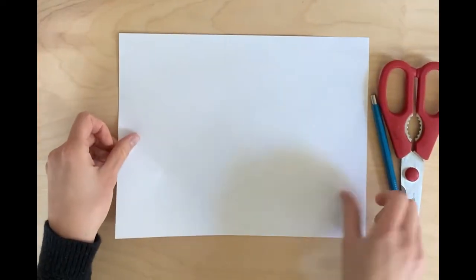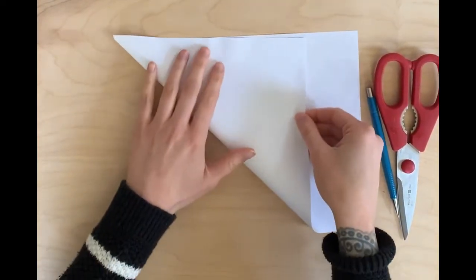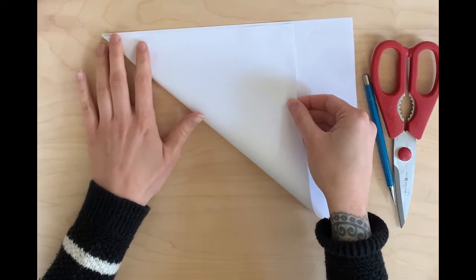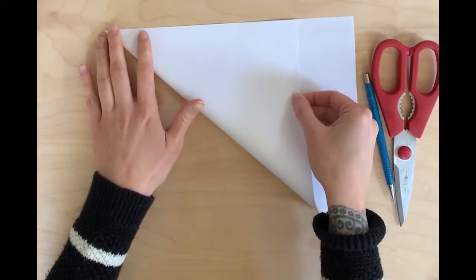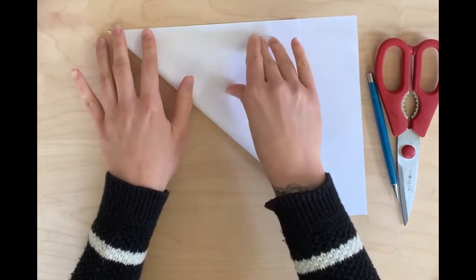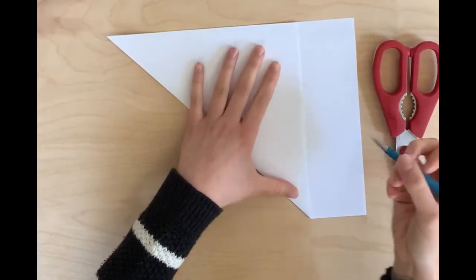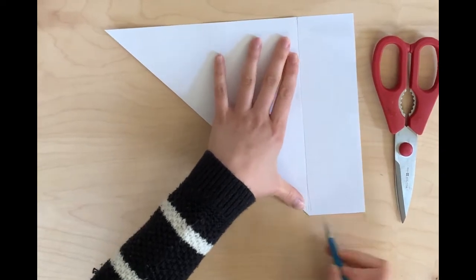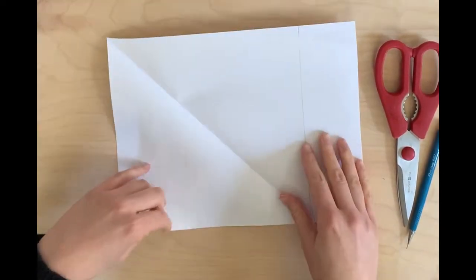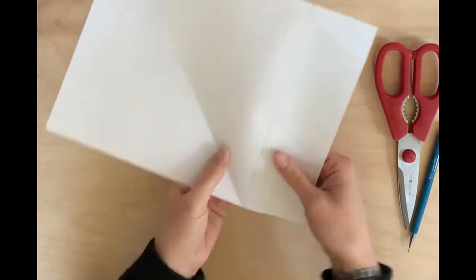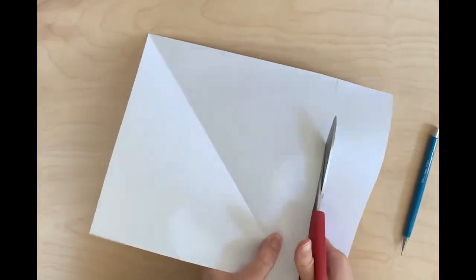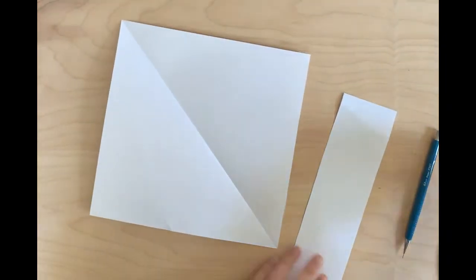Now if you want a square, put it lengthwise on the surface in front of you. Take the bottom corner and fold it up to the top edge of the paper so that you make a triangle. Fold the seam, trace the line, unfold your paper, and cut the extra off. And now you have a square.